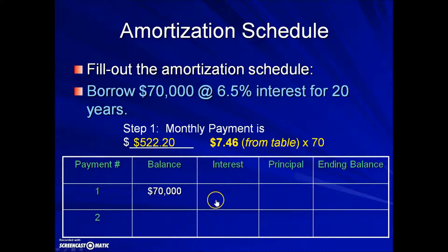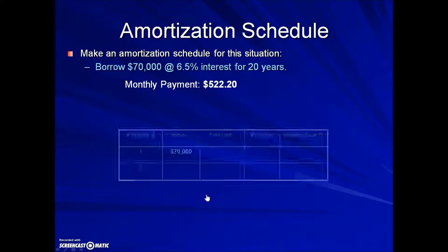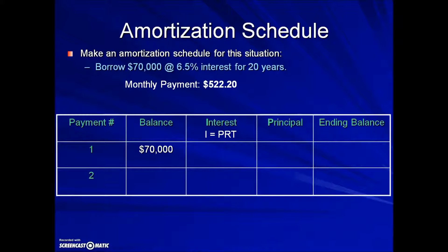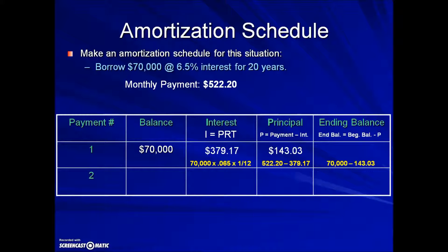The interest for the first payment is calculated by multiplying the principal — the beginning balance — times the interest rate as a decimal, times time of one month or one-twelfth. That results in a value of $379.17. That will be subtracted from the monthly payment and the leftover portion counts as the principal. The principal is what reduces our loan, so our ending balance will be the difference between the beginning balance of $70,000 and the principal portion of our monthly payment, resulting in an ending balance of $69,856.97.